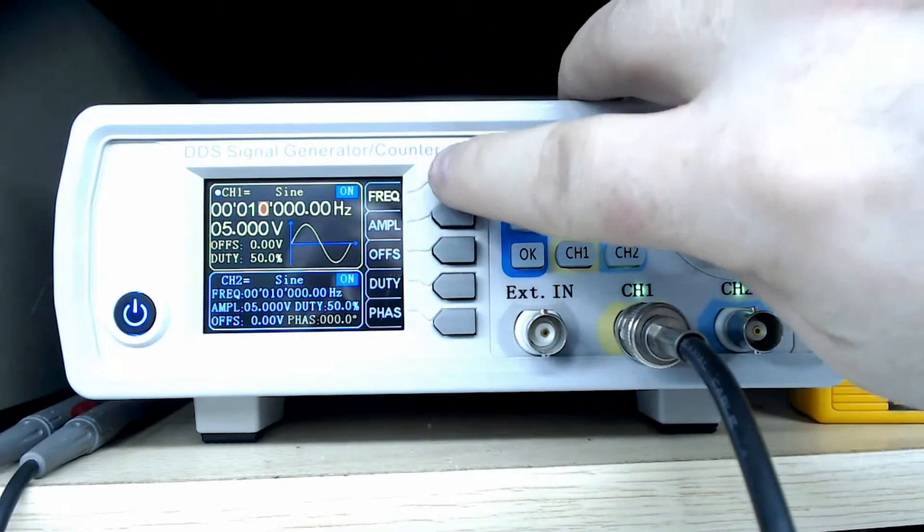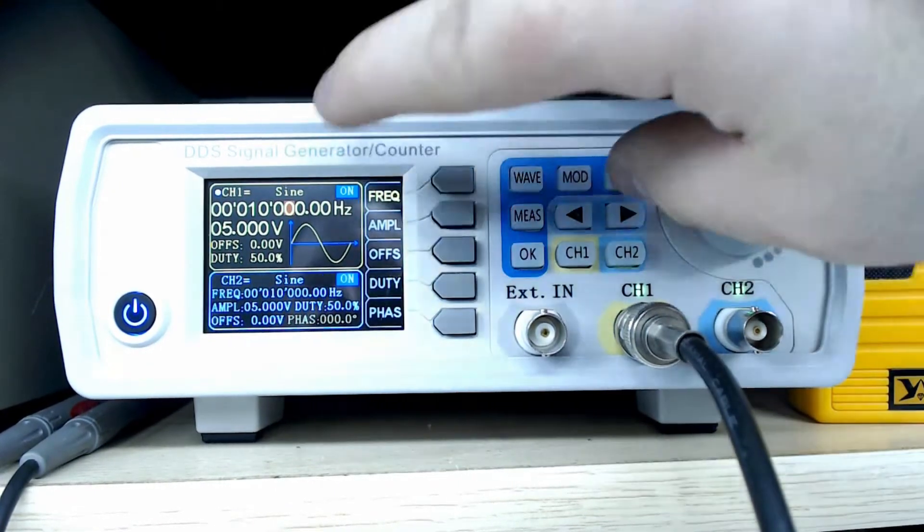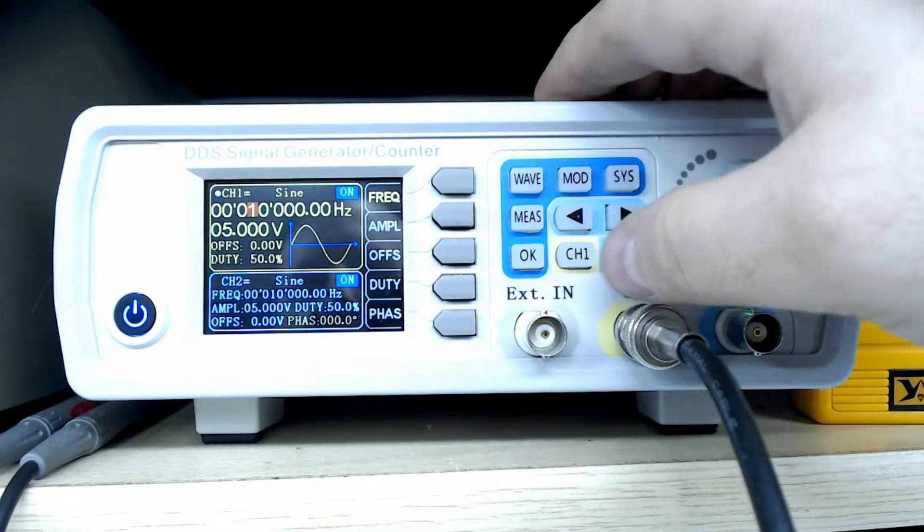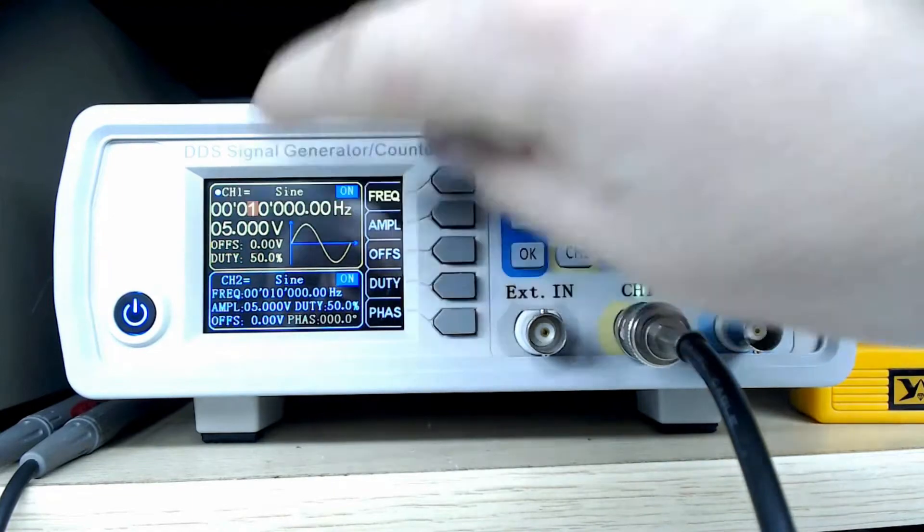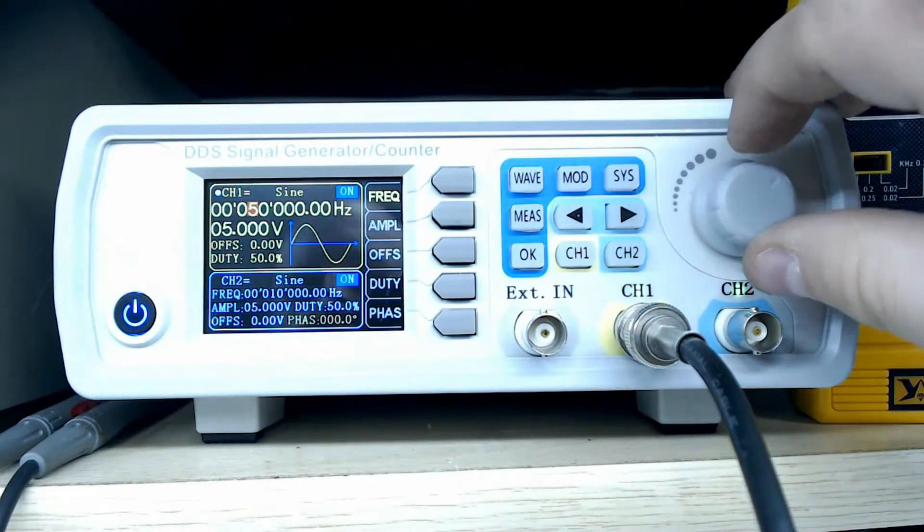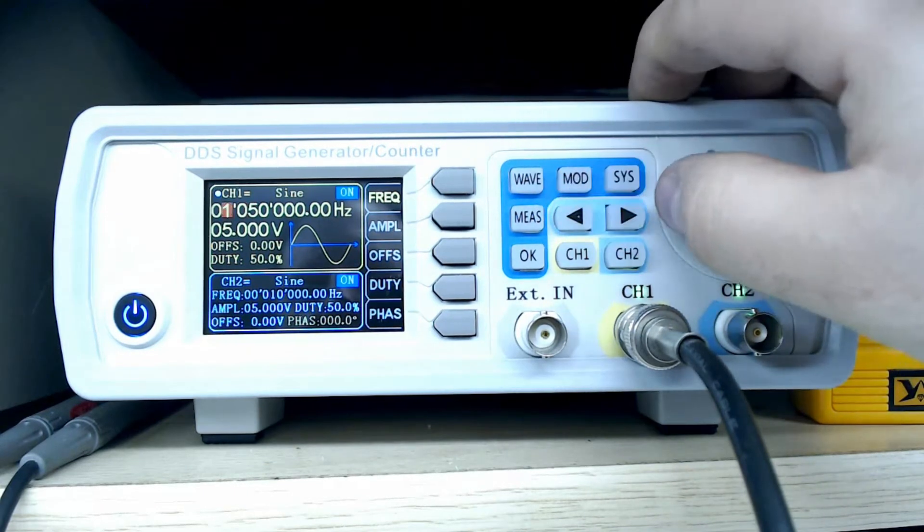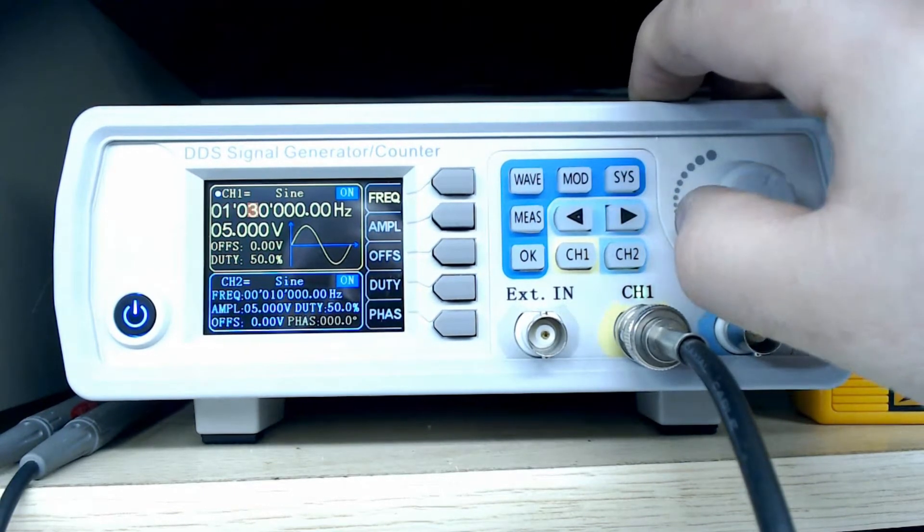If you want to change the frequency, press this, then you use this to move the cursor around. You can see the red selection. So if I wanted to make this 50 kilohertz, I move it to here, select the one and turn the knob. So now I'm at 50 kilohertz. Or if I want 100 kilohertz, say one megahertz, go up to one and go down here like this and now we're at one megahertz.